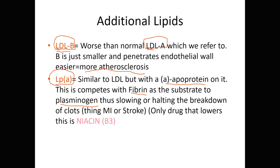Plasminogen breaks down clots. If someone has high Lp(a), it blocks plasminogen from cutting down fibrin. This means the person is more prone to clot formation and myocardial infarctions, strokes, and other events. This is something we definitely want to treat and lower in our patients.